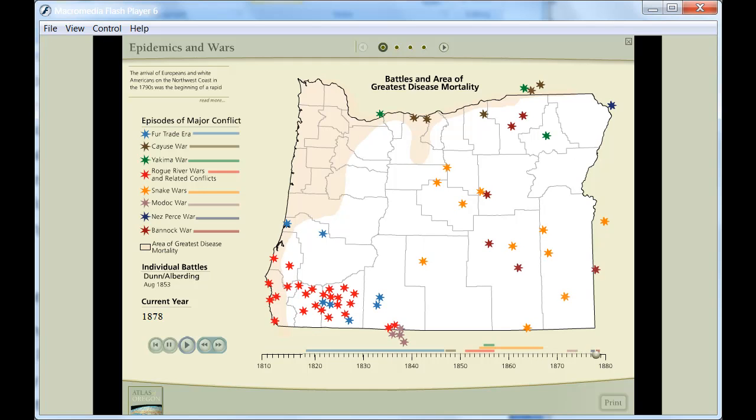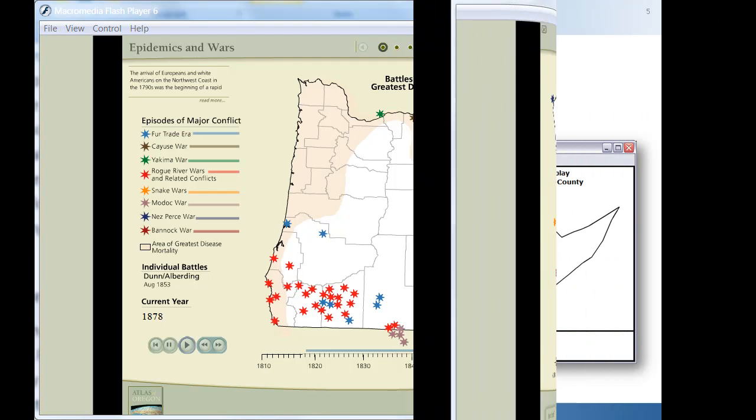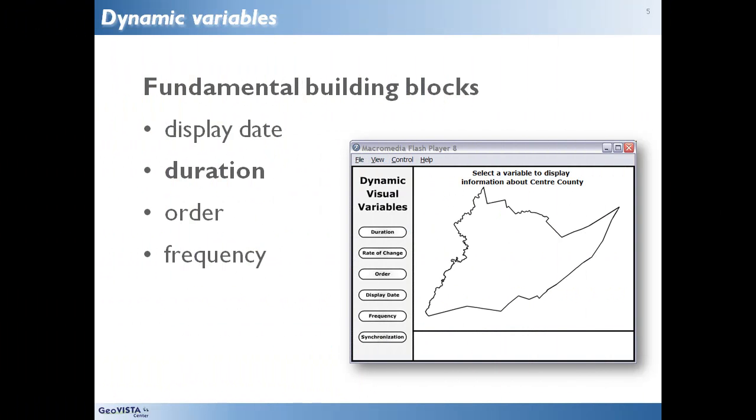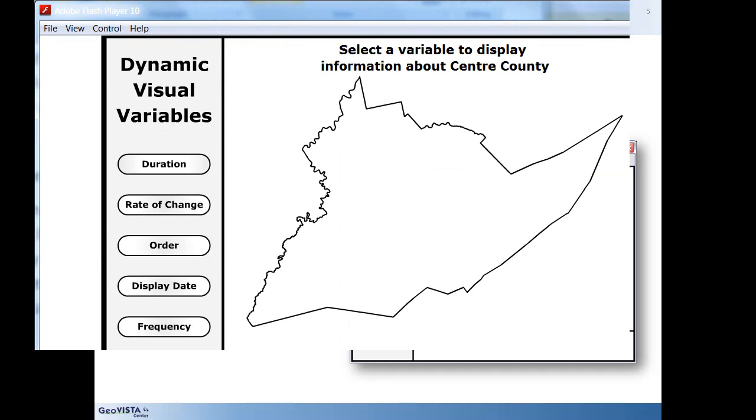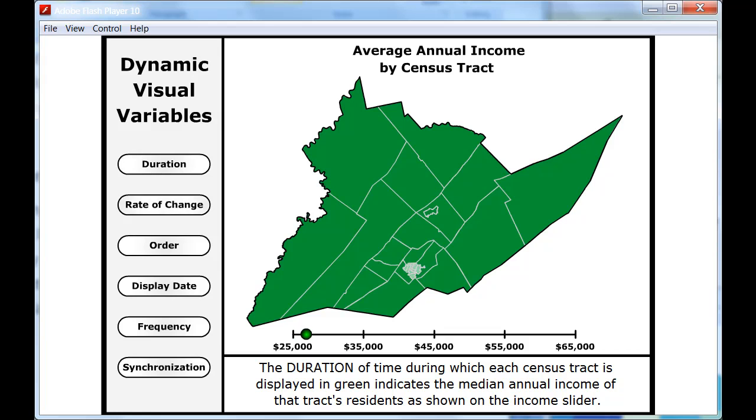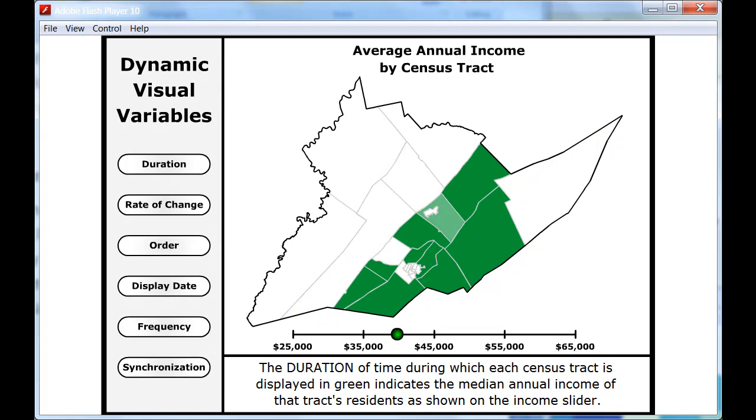This rather schematic example for census tract data in Centre County, Pennsylvania illustrates the use of display duration to signify a quantity other than time. In this case, census tracts remain highlighted with color for a duration that is proportional to the median annual income in 1990.